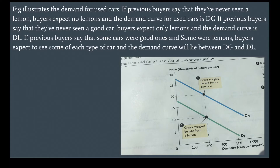The figure illustrates the demand for used cars. If previous buyers say they have never seen a lemon, buyers expect no lemons and the demand curve is DG. If previous buyers say they have never seen a good car, buyers expect only lemons and the demand curve is DL. If previous buyers say some cars were good ones and some were lemons, buyers expect a mix and the demand curve lies between DG and DL.